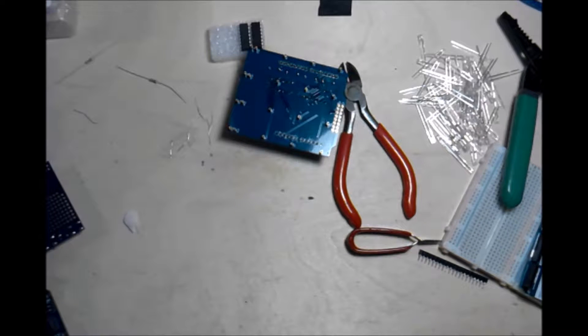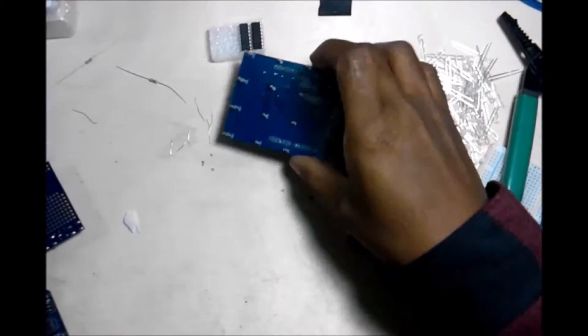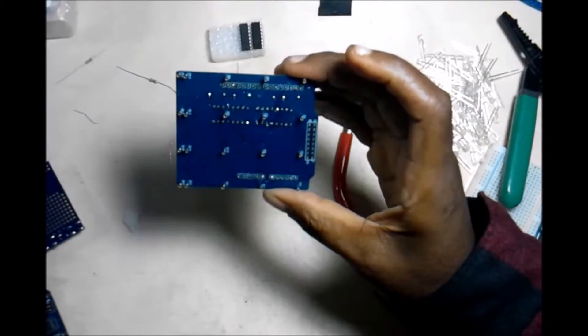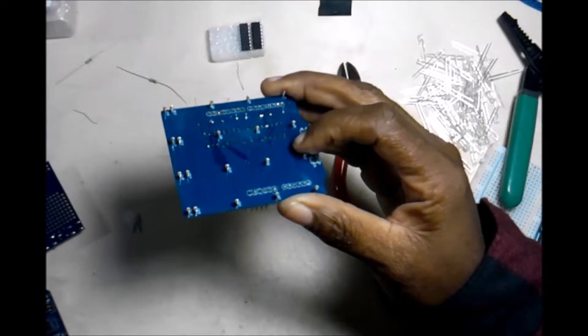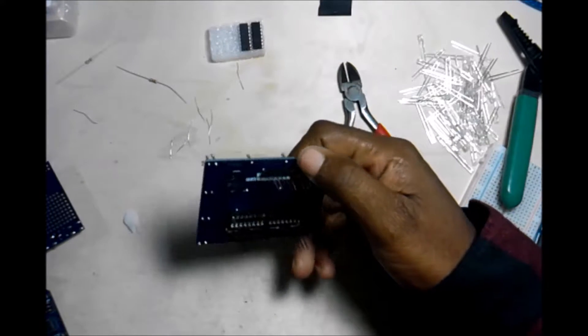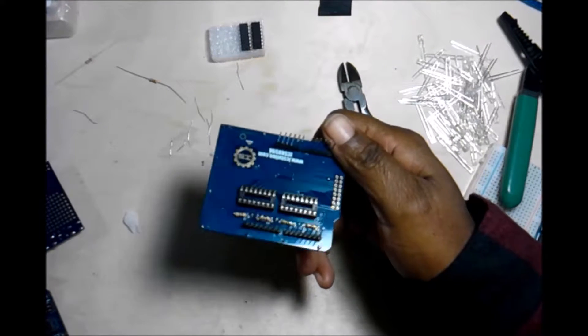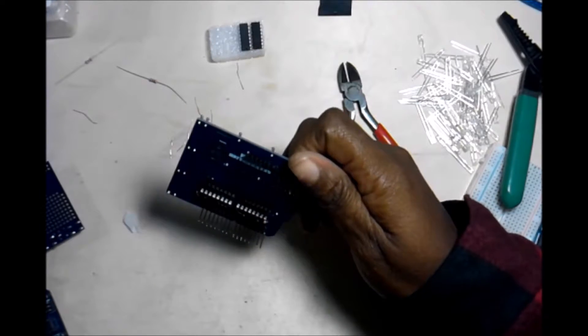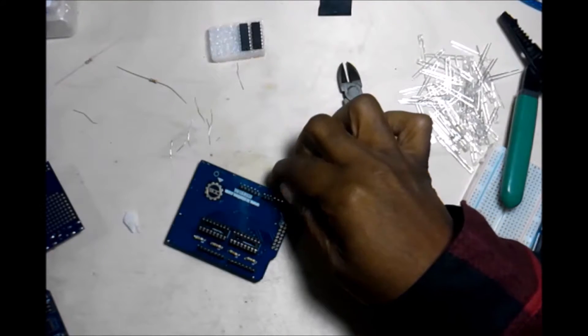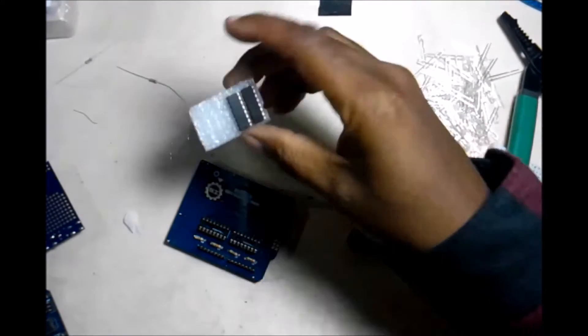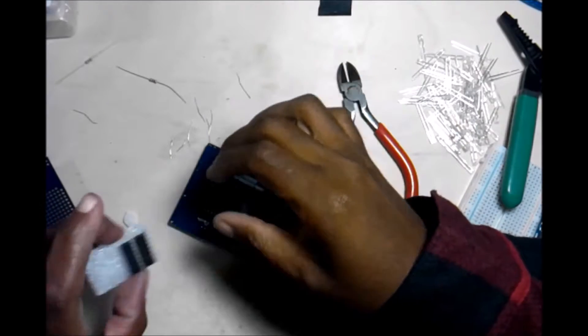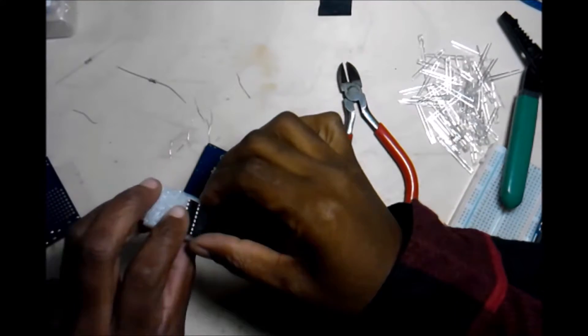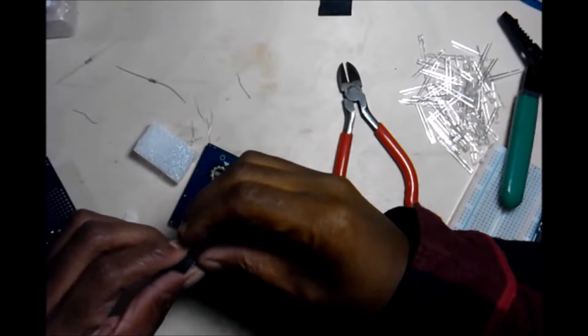So we have pretty much the board taken care of. We have all of those pins that the LED leads are going to fit into. We have our pins that the Uno is going to fit into. And the sockets, the resistors, all soldered in. Now, all we need to do is to put our ICs in.